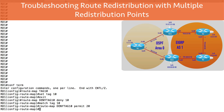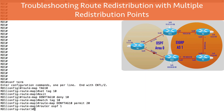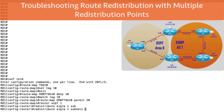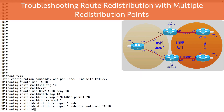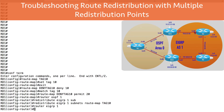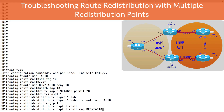Now that we've got these route maps created, let's apply them to our routing processes. Let's go into router OSPF process ID 1 and reissue the redistribute command: redistribute EIGRP autonomous-system 1, include the subnets keyword, and apply route-map tag10. This assigns a tag of 10 to routes being redistributed into OSPF from EIGRP. Now let's apply the other route map to the EIGRP routing process — router EIGRP autonomous-system 1, and reissue the redistribute command: redistribute OSPF process ID 1, applying route-map deny-tag10.